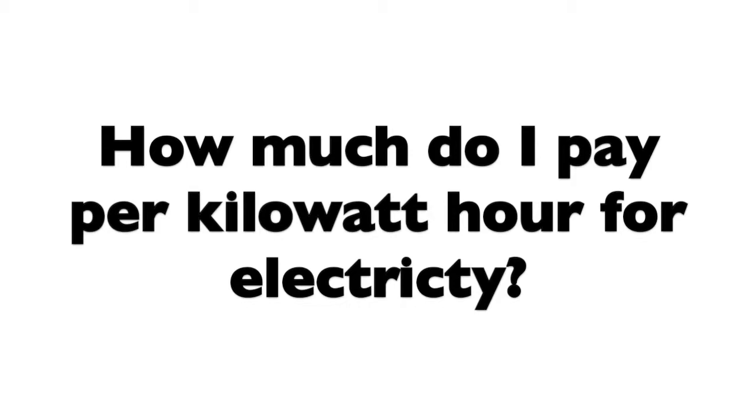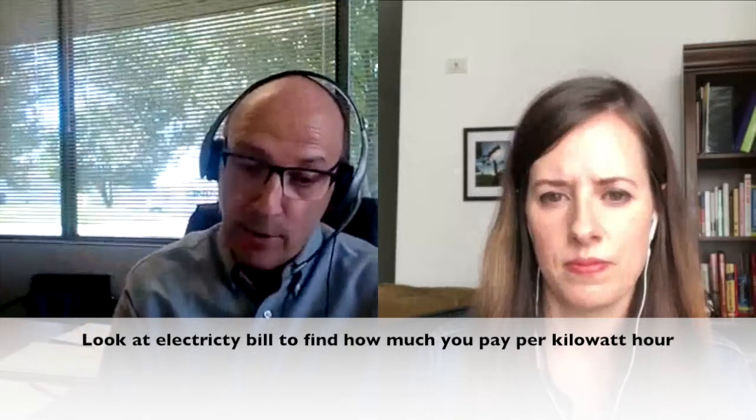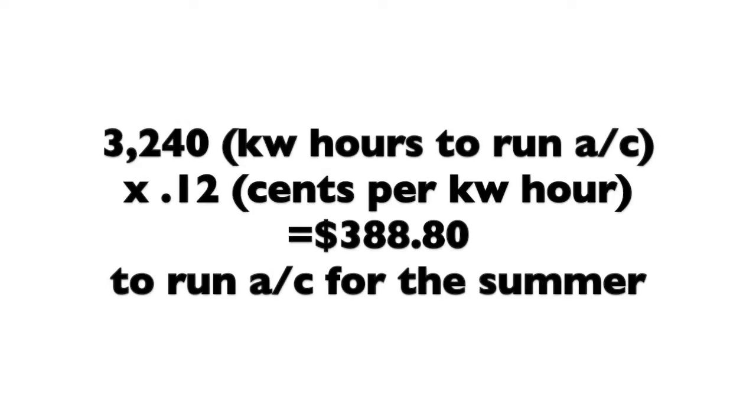Now all I need to know is how much do I pay for a kilowatt hour of electricity? If you go to your electric bill, it'll show an energy charge plus a stack of taxes. I make it simple — I just look at the total number and divide by how many kilowatt hours I used. We're going to be around 12 to 15 cents a kilowatt hour, so let's use 12 cents, that's 0.12. So 3,240 kilowatt hours times $0.12 gives me $388 for an average summer.